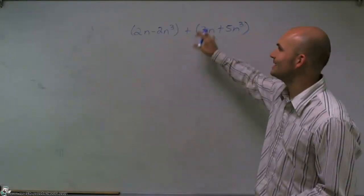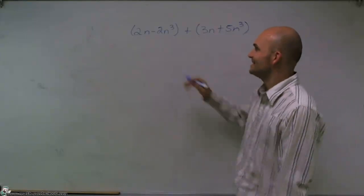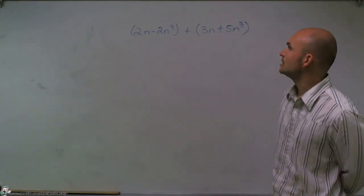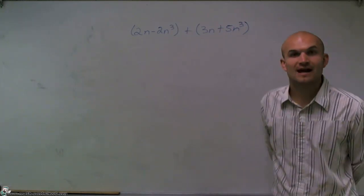Welcome. What I want to do today is show you how to add two polynomials. So the first polynomial I have is 2n minus 2n cubed plus 3n plus 5n cubed.